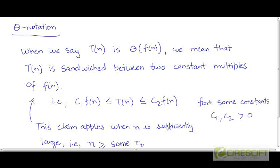That is, there exists some constants c1 and c2 which are both greater than 0, such that the curve for T will be sandwiched between the curves for c1f(n) and c2f(n). So T can be sandwiched between these two curves.